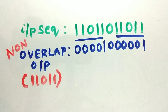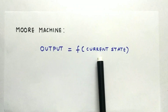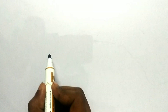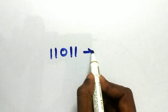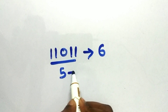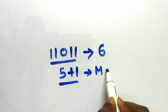Now let us go to the Moore machine. The Moore machine output is a function of the current state only — the output depends only upon the current state. To draw the sequence detector state machine for the pattern 11011, we need to know the number of states. For the pattern 11011, the number of states will be 6: five states corresponding to the five bits of the pattern, plus one extra state required in the Moore machine.